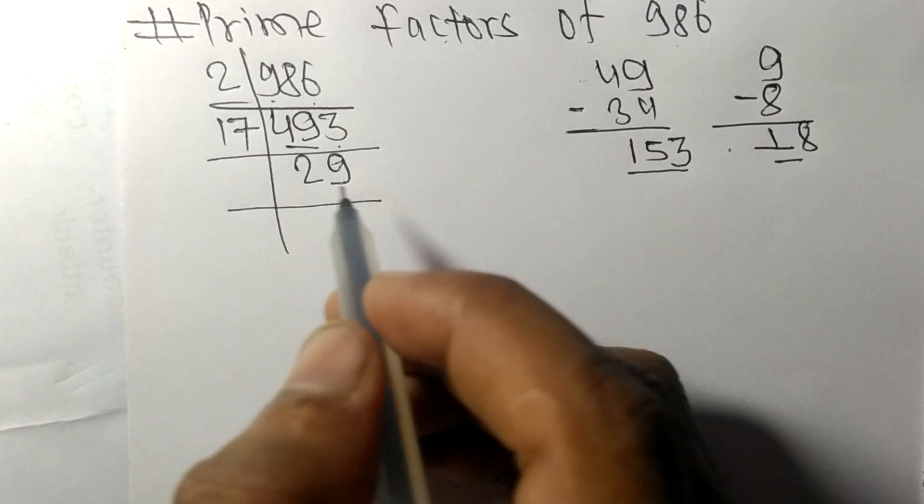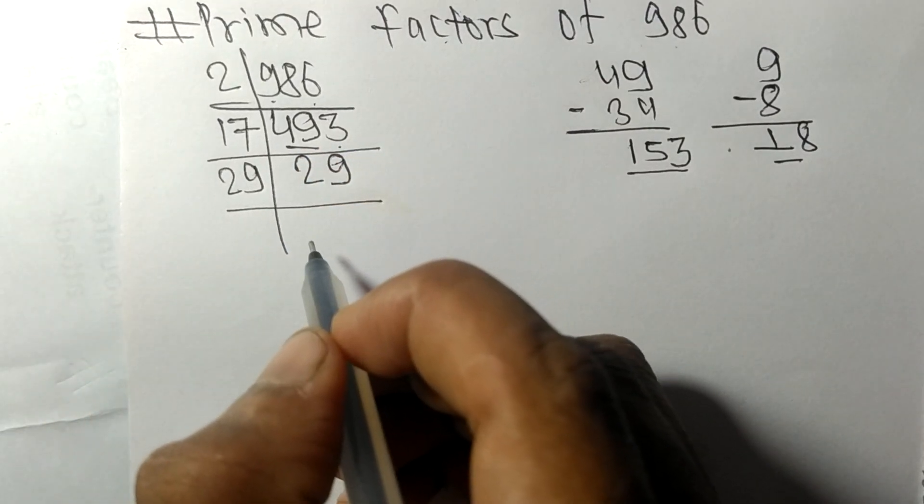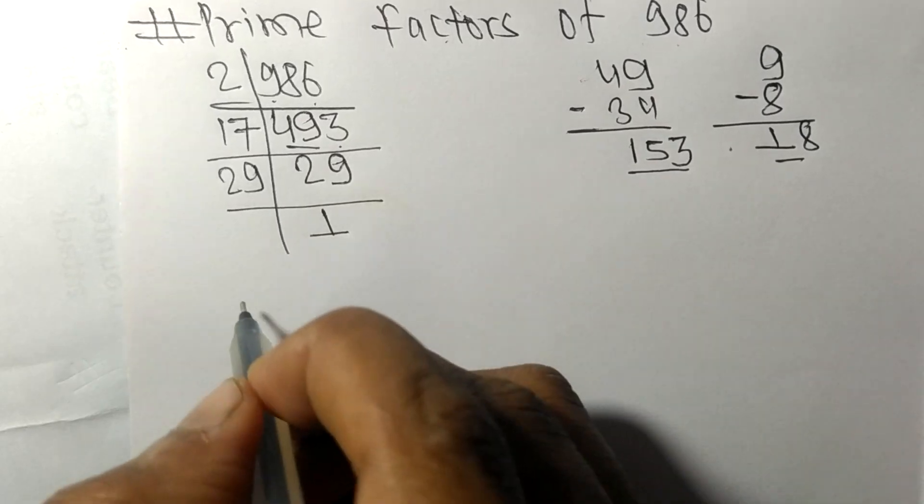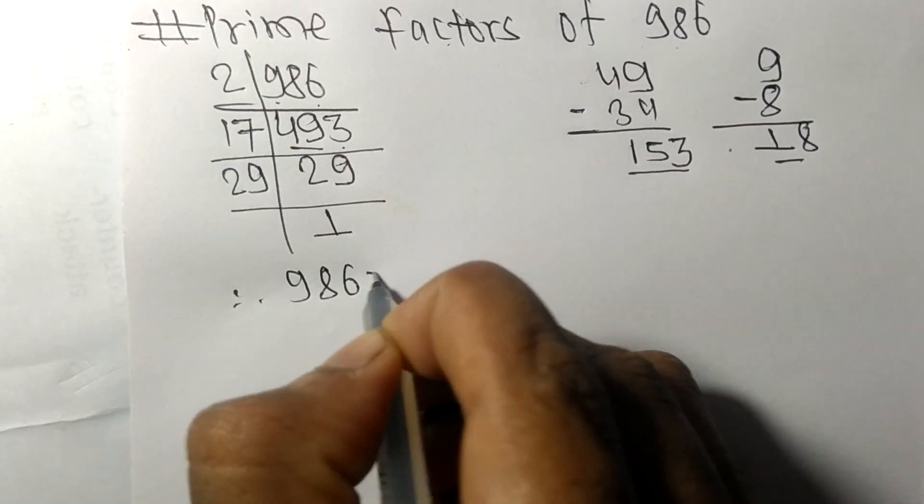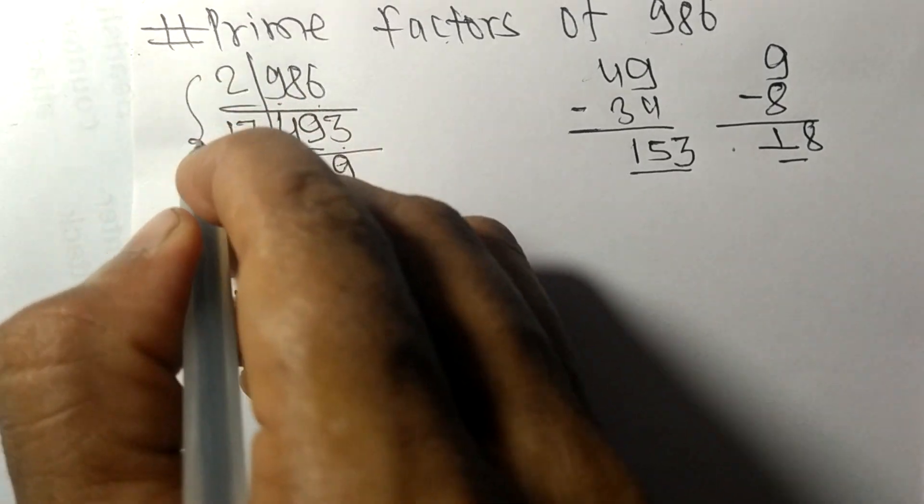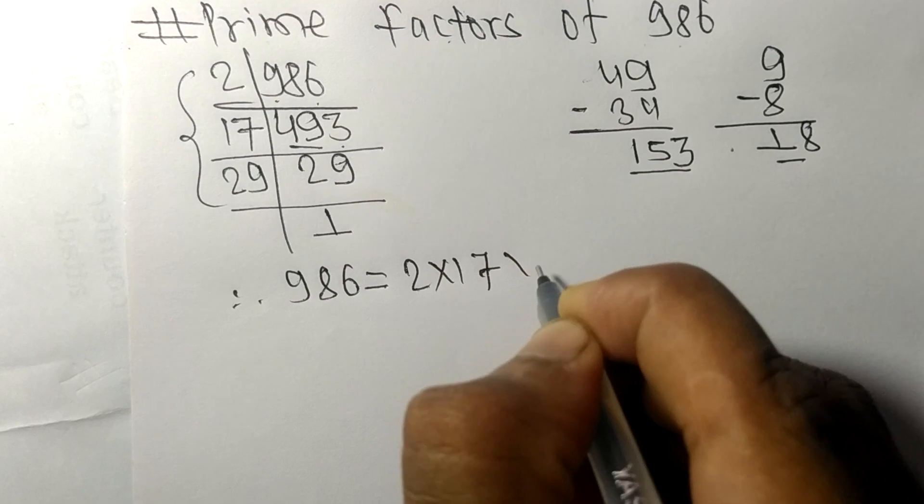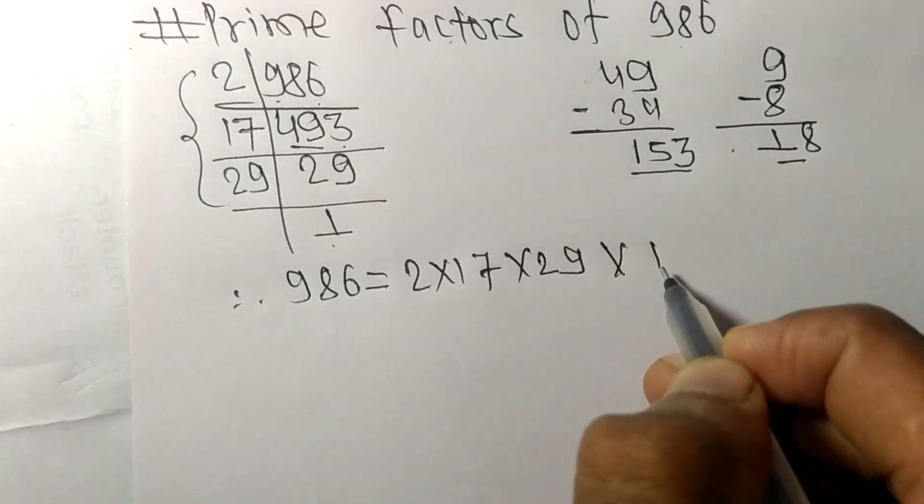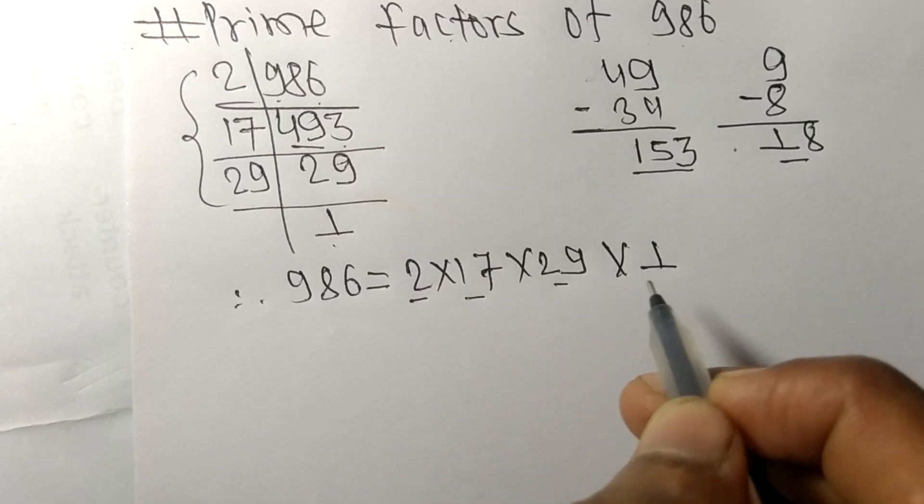It is exactly divisible by 29 only, and on dividing we get 1. Therefore, 986 equals 2 times 17 times 29 times 1.